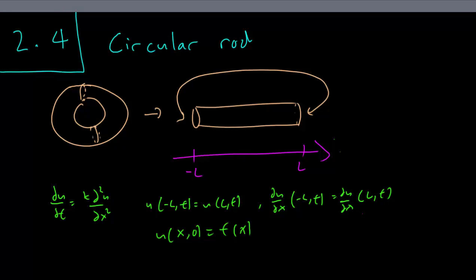So this is how it looks like in terms of the boundary conditions. We have the temperature of one end same as the temperature of the other end. This is expressed by u(-L,t) equals u(L,t). Because obviously the two ends are really connected, so the temperature is the same.